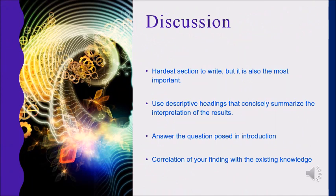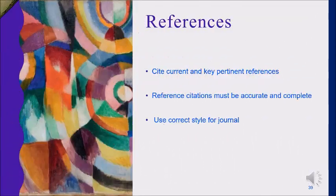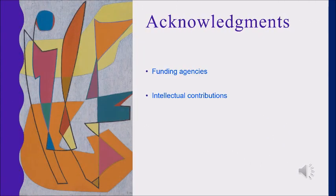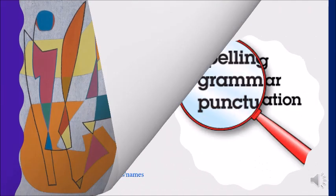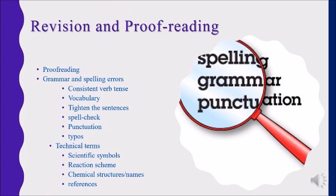The hardest section to write is the discussion. Use descriptive headings that concisely summarize the interpretation of the results. Answer the question posed in the introduction. Correlate your findings with existing knowledge. Cite current and key pertinent references — reference citations must be accurate and complete. Use the correct style for the journal. Also acknowledge the funding agencies and intellectual contributions. Proofreading is essential: identify and rectify grammar and spelling errors, maintain consistent verb tense and vocabulary, and check spelling and punctuation.